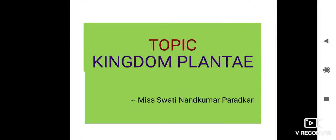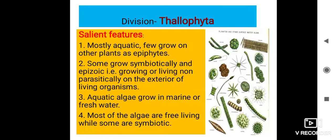Hello everyone, welcome. In the last video lecture, you read about the overall classification of Kingdom Plantae. Kingdom Plantae is classified into two groups: cryptogams and phanerogams. Cryptogams are classified into non-vascular plants and vascular plants. In today's lecture, you will study about the division Thallophyta, which comes under the group cryptogams. Cryptogams are spore-producing plants and do not produce seeds and flowers. All algae come under this division.